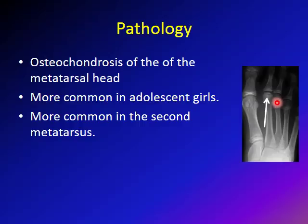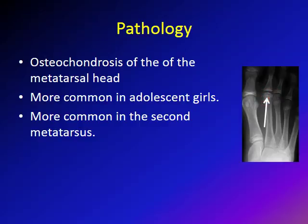If you look here, this is the growth plate of the third metatarsal, this is the growth plate of the fourth metatarsal, this is the epiphysis of the fourth, and this is the epiphysis of the third — we sometimes call it the head of the metatarsal. This is the second metatarsal, showing the growth plate and the head. You can see there is a collapse and affection of the ossification in this area, which is osteochondrosis of the metatarsal head — this is Freiberg infraction.